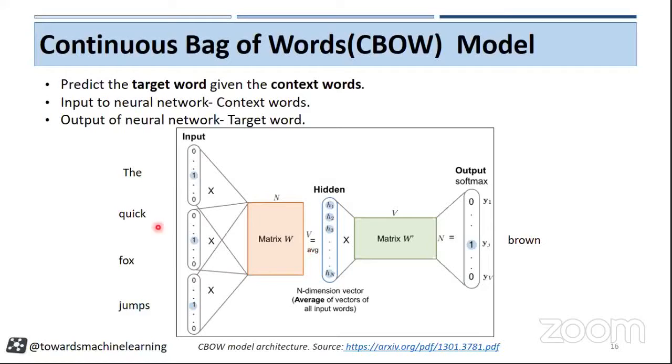And we are providing our network some context values. So here again, our first task is to convert every context word into one hot representation, their one hot representation.